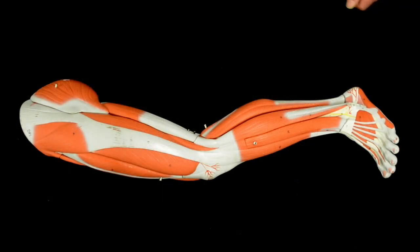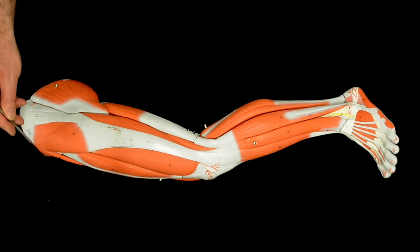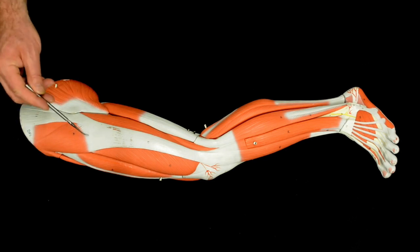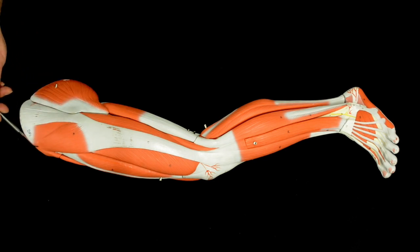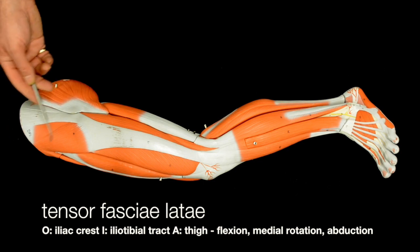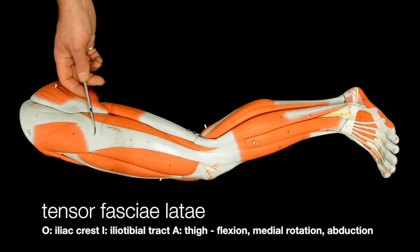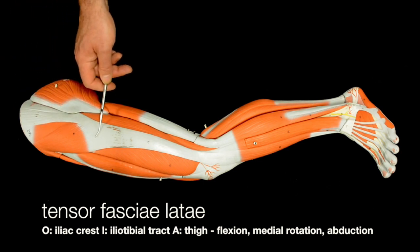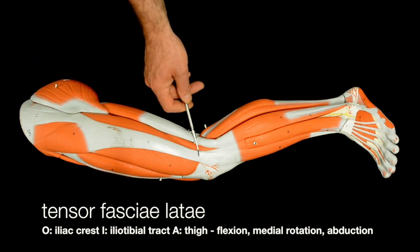This video is about the muscles of the lower limb. We're going to start off with this muscle here, which is called the tensor fasciae latae, and it originates just laterally to the anterior superior iliac spine, and it inserts on the iliotibial tract.